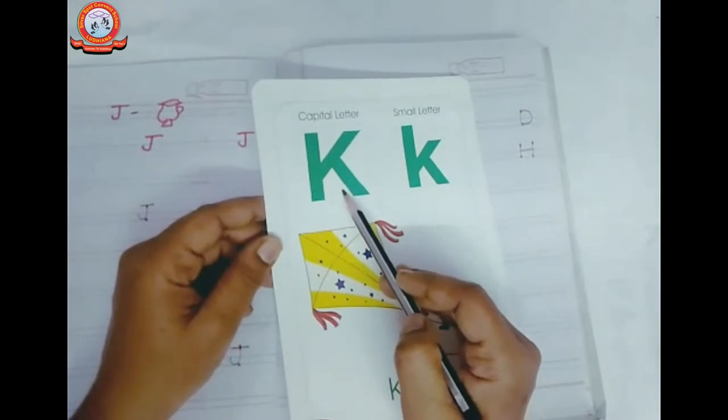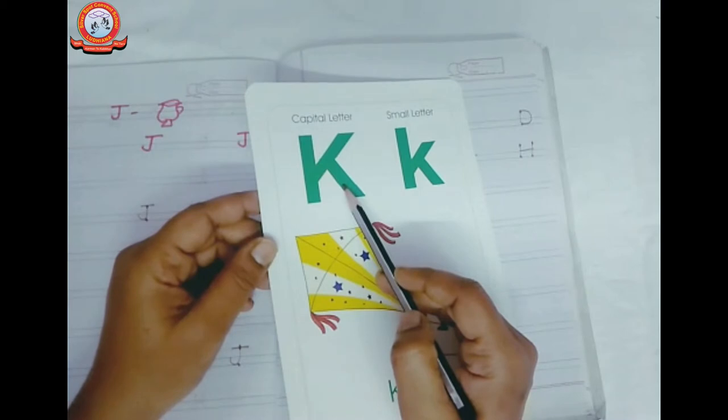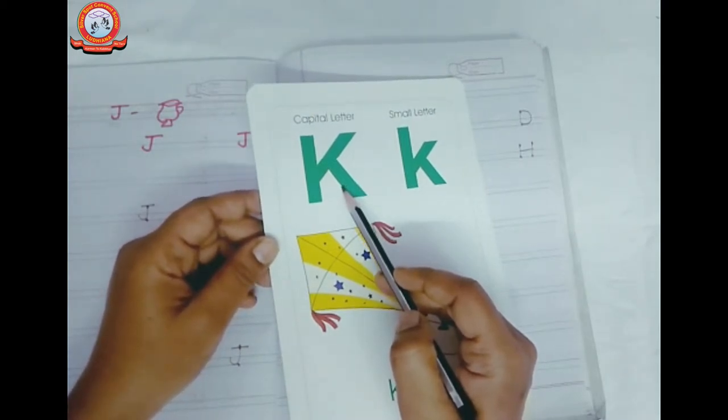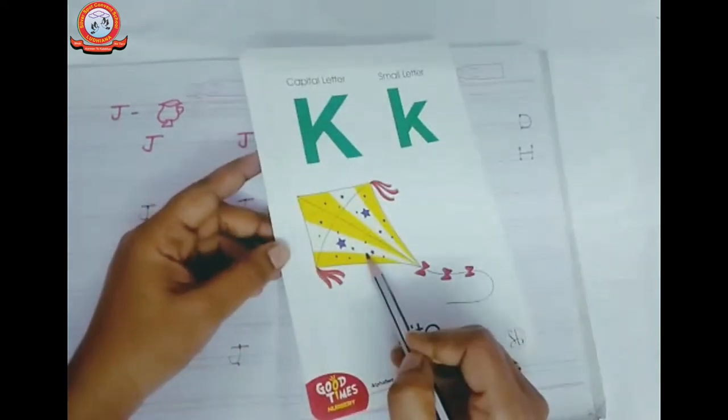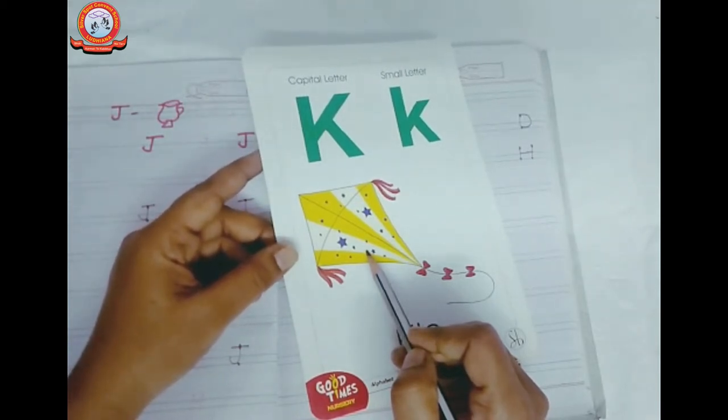Letter K. This is letter K. What is this? Letter K. What is the sound of letter K? K says K K K Kent. K says K K K Kent.